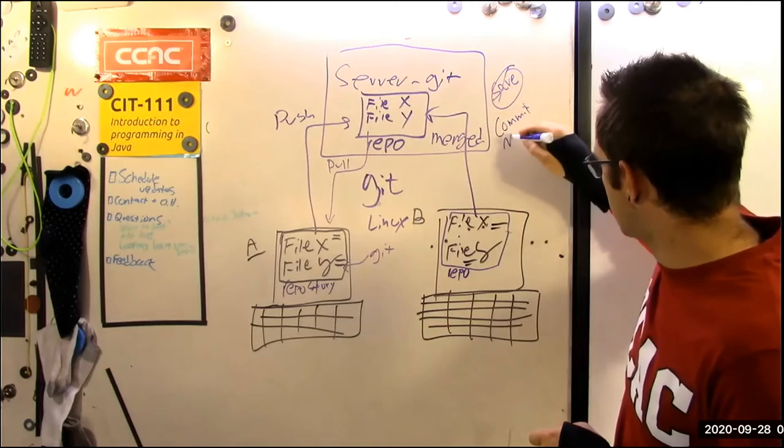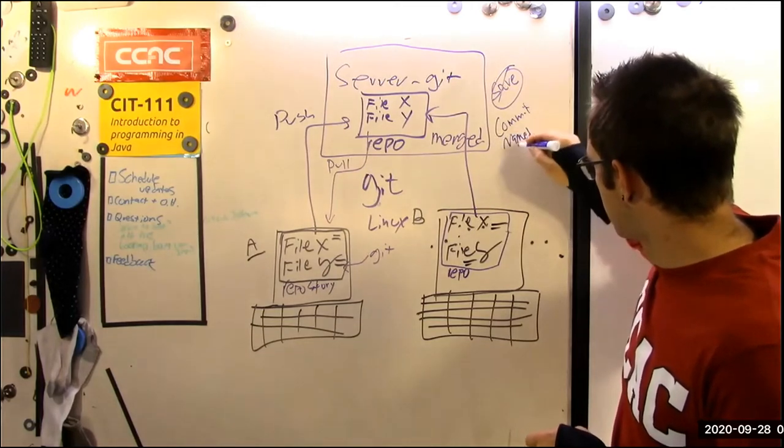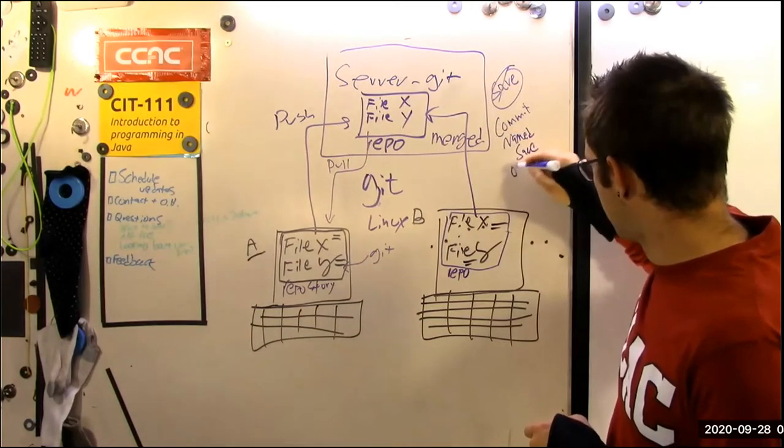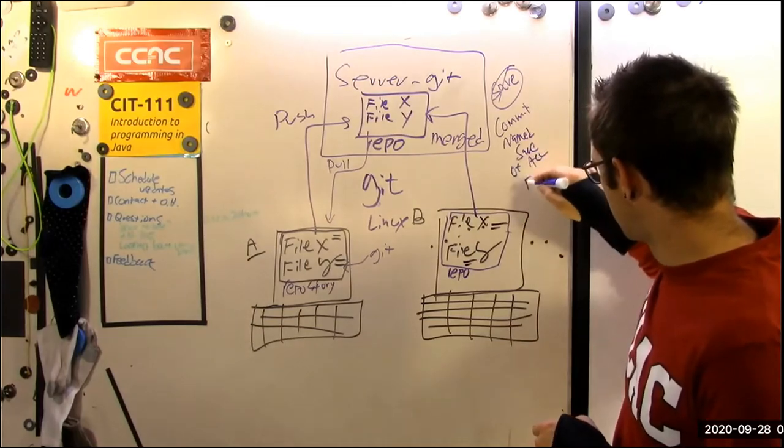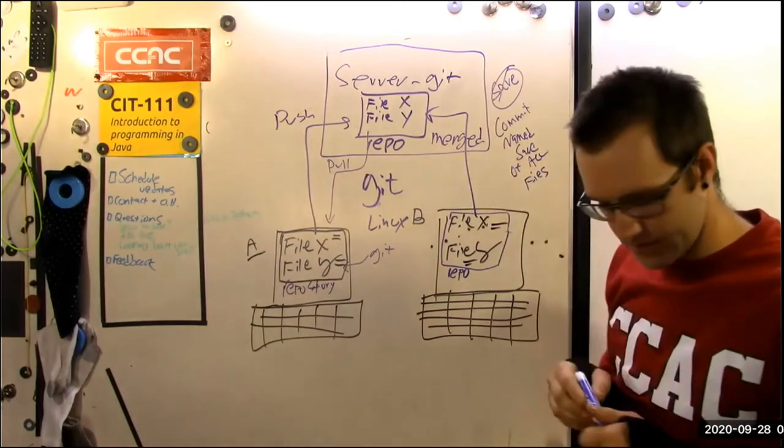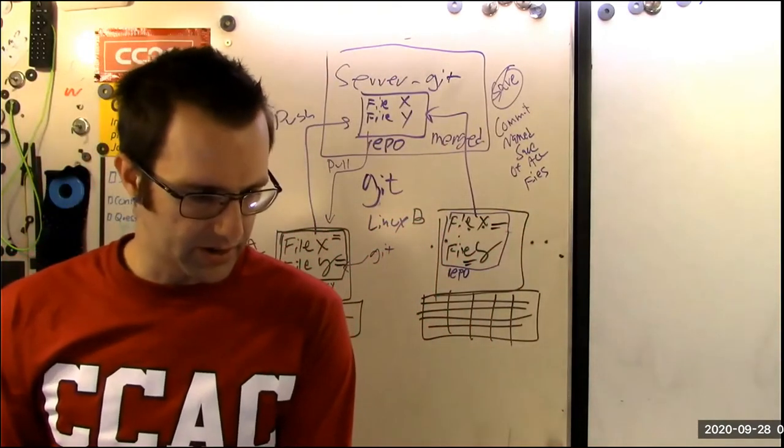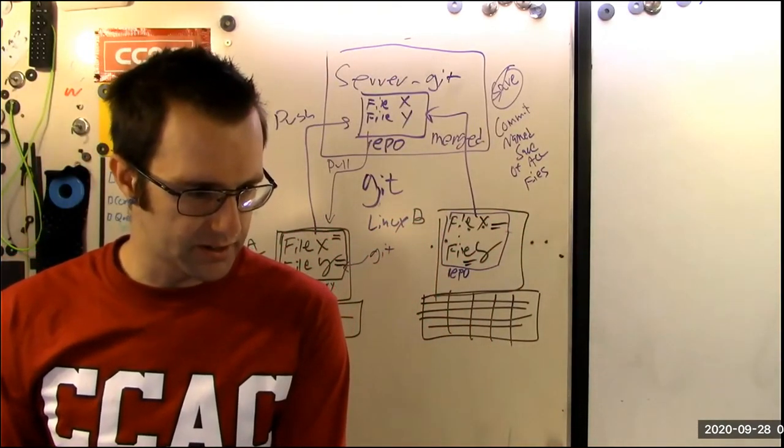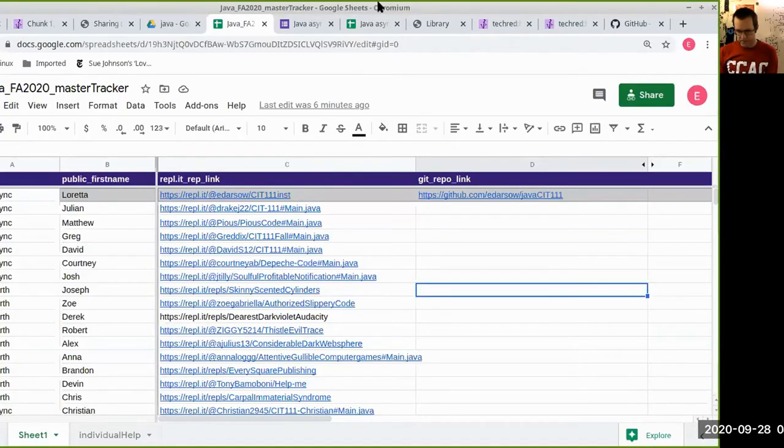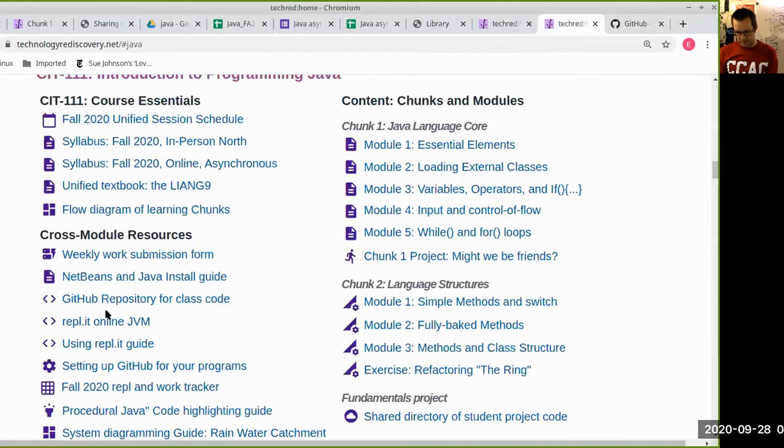So commit is like a named save of all files in your repository. And so let me show you a little bit about how this works using our class code and we'll build this knowledge slowly over time. So I have uploaded all the files that I used to create my tutorials on a public repository that is linked right here, GitHub repository for class code. So when I click this,